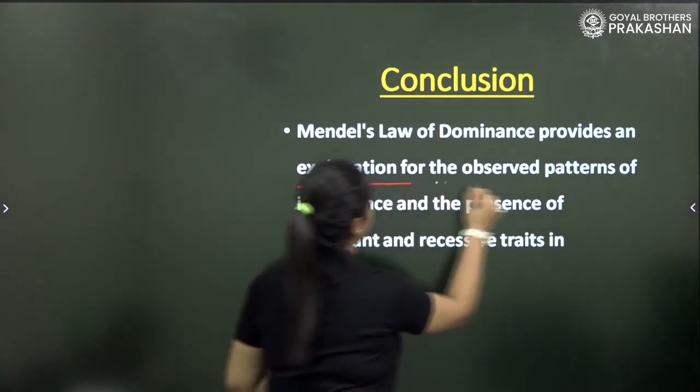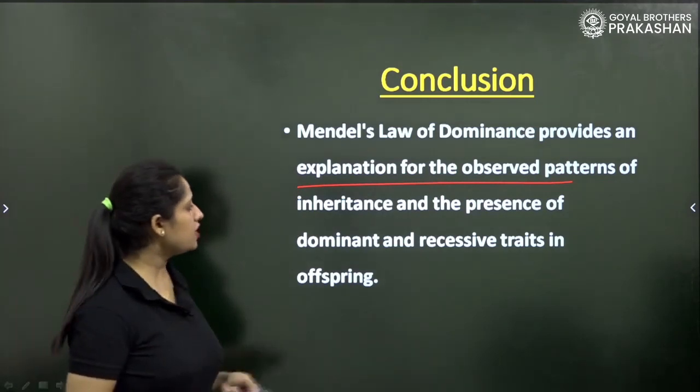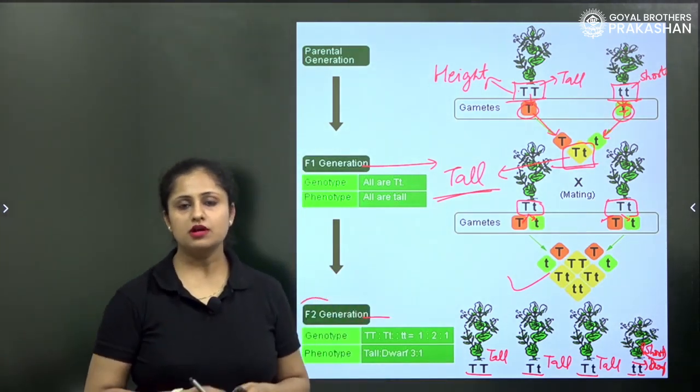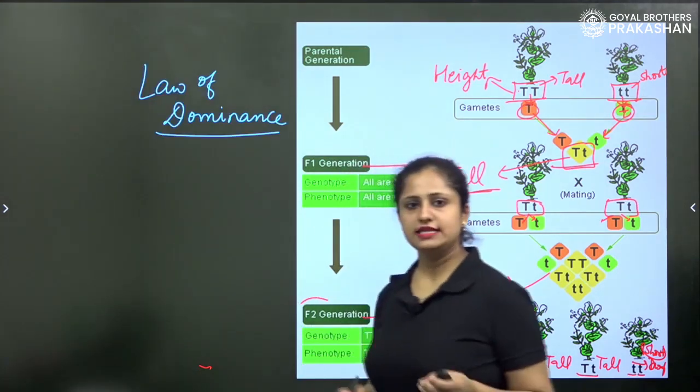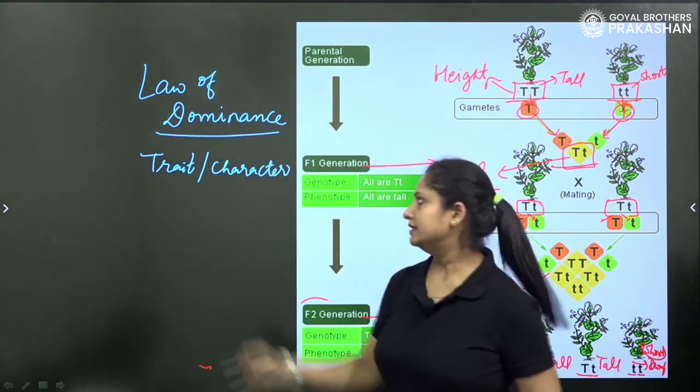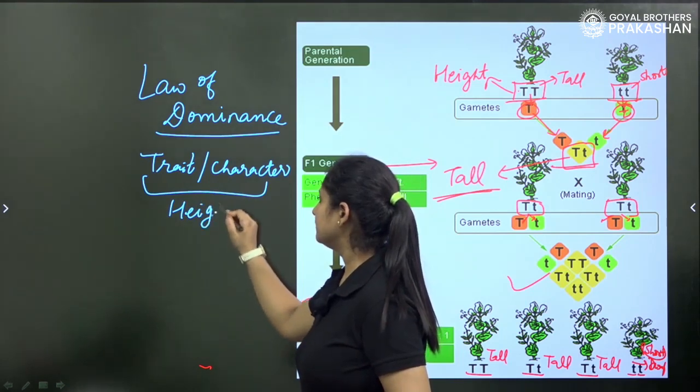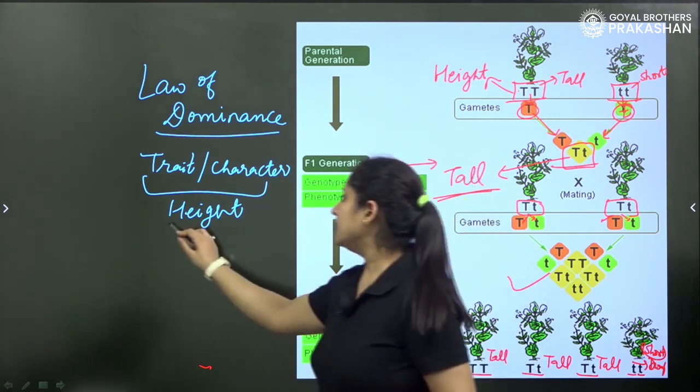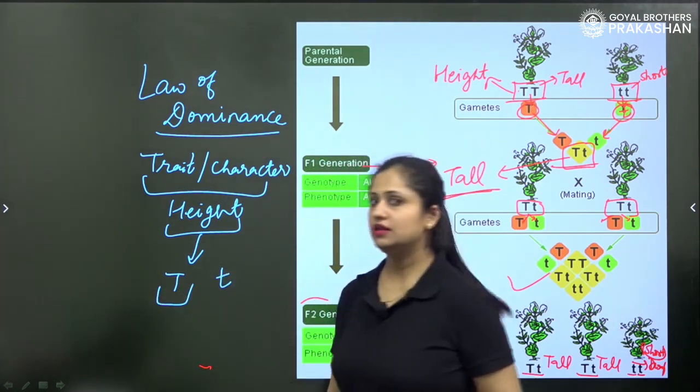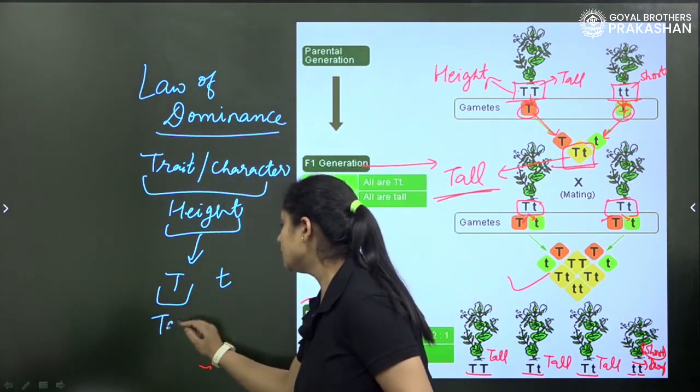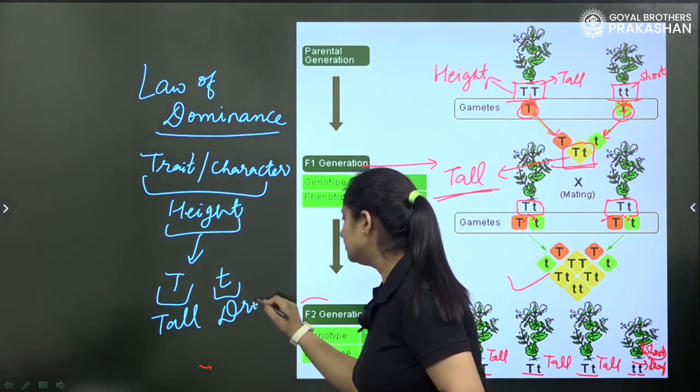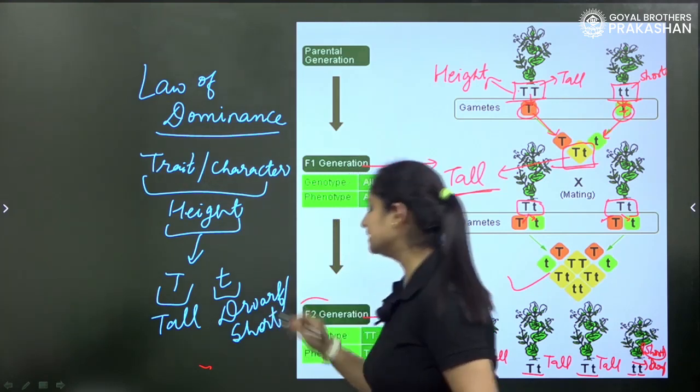Mendel's law of dominance provides an explanation for the observed patterns of inheritance and presence of dominant and recessive traits in the offspring. Based on the observation of this cross or monohybrid cross, he concluded a law of dominance. For example, if there is a trait or character that is height, then there are two alleles that code for this height, that is T and t. This capital T denotes the dominant character that is tall and this small letter denotes the recessive allele, that is the short variety or the character or trait.